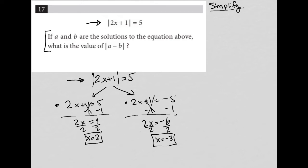The question says, if A and B are the solutions to the equation above—so A equals 2 and B equals negative 3, or it could be the other way around—what is the value of the absolute value of A minus B?